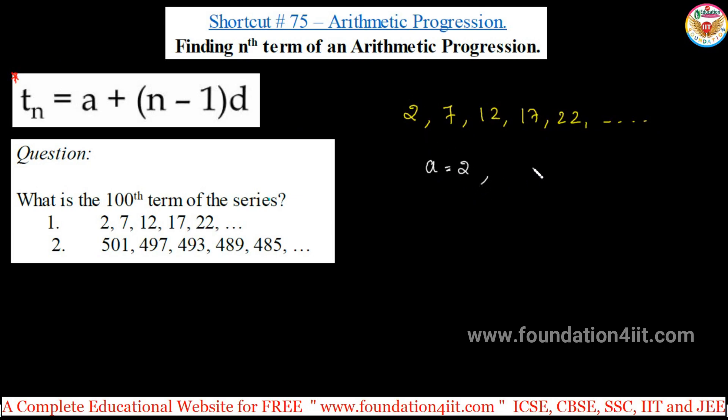And d is the common difference. Common difference between successive terms, that means second term minus first term: 7 minus 2 or 12 minus 7, 17 minus 12. Difference between any two successive terms, second number minus first number you take. Same will come, even 12 minus 7 also you get the same. There is a common difference, it is 5.